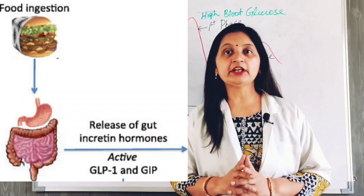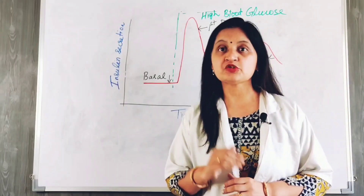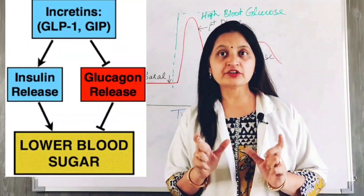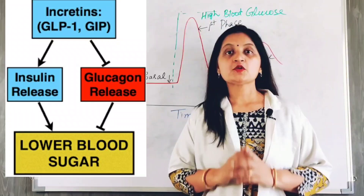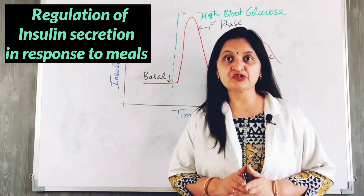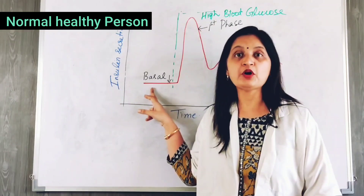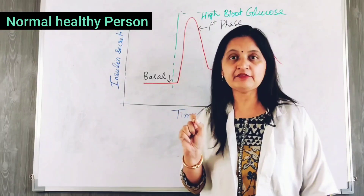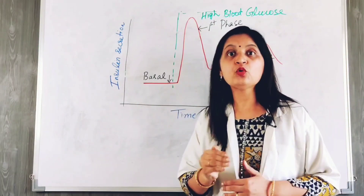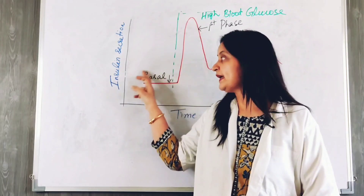The incretin hormones are secreted from the intestine in response to ingestion of oral glucose or nutrients, and they stimulate the pancreatic beta cells to cause secretion of insulin. This helps in lowering the blood glucose level and helps to maintain it in a narrow physiological range, maintaining euglycemia. To understand the incretin effect, it is important to know the physiology of insulin secretion in response to meals. The figure here shows insulin secretion in response to meals and high blood glucose. In a normal healthy individual in the fasting state, there is constant low-level secretion of basal insulin, which enhances glucose uptake by peripheral tissues such as liver, muscle, and adipose tissue to maintain euglycemia.